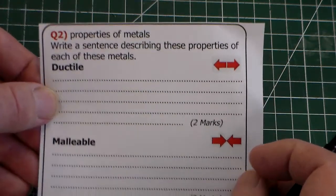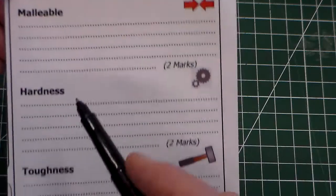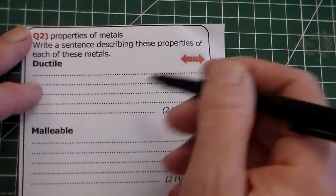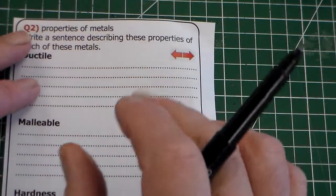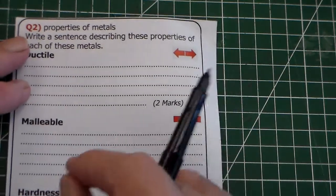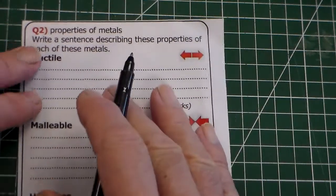And the properties are ductile, malleable, hardness and toughness. Now this is something you absolutely need to know. And I've done some little logos there because I think people get them confused and they get them muddled up. So let's go through this.